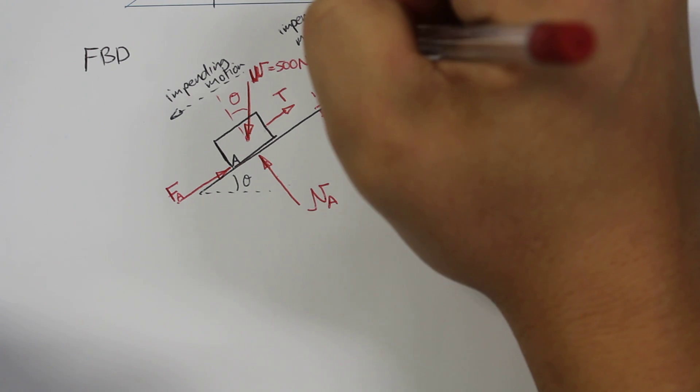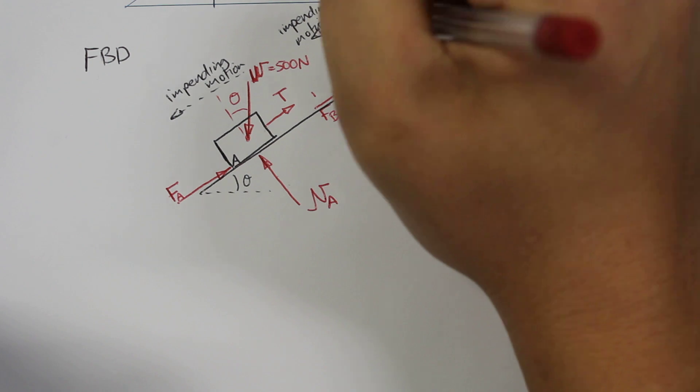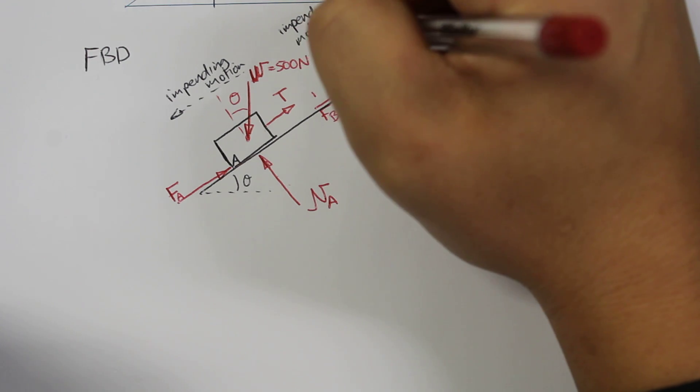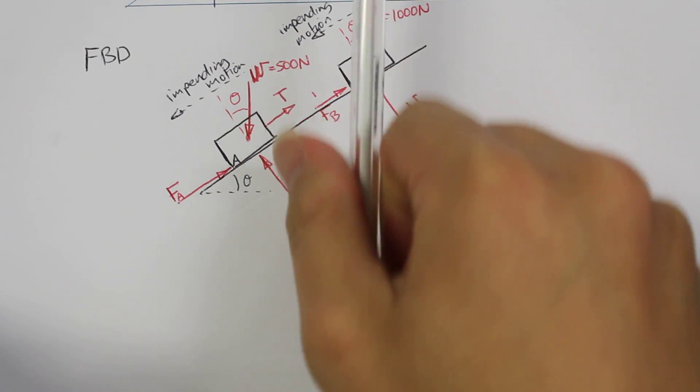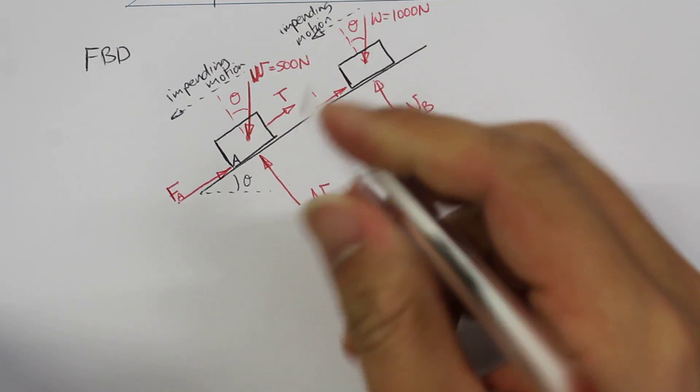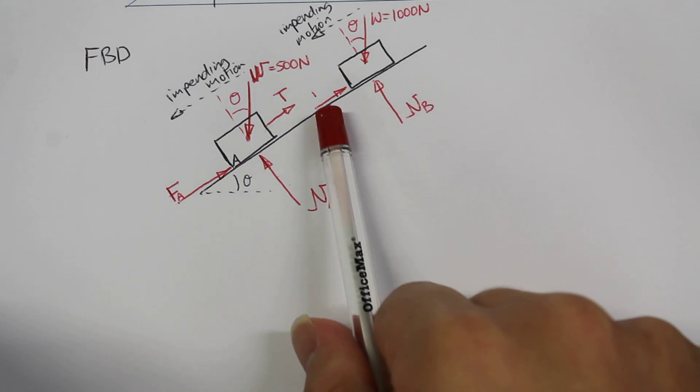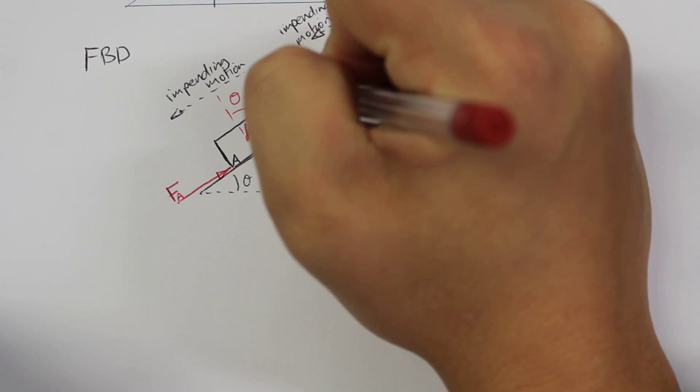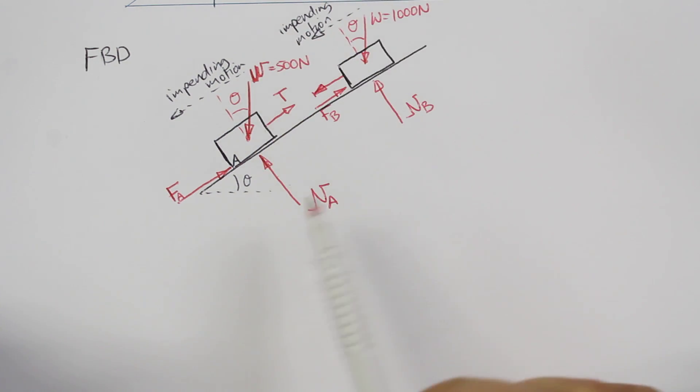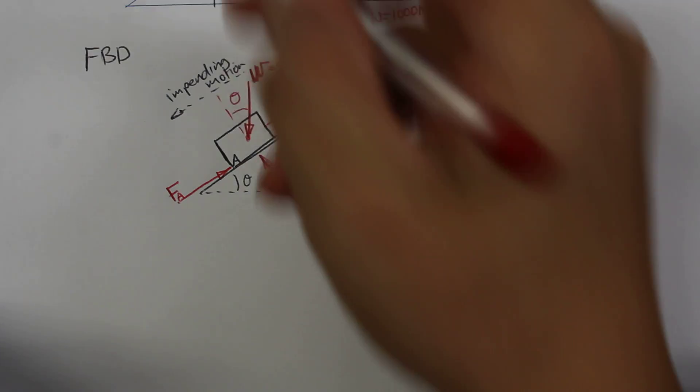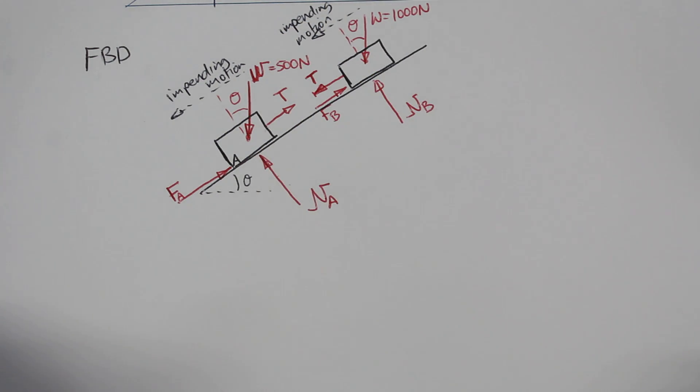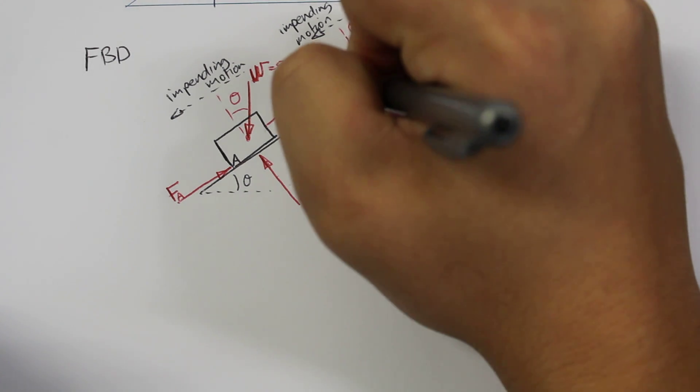We'll have a weight force which acts down, and the weight force will be equal to 1000 newtons, so that was given in the question. Here we've got our angle theta, so the weight force will act always vertically up and down. And we also now have our tension force which is within the string, and the tension force will try to pull the block down the incline.